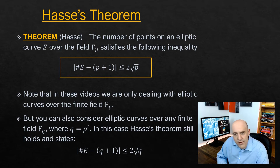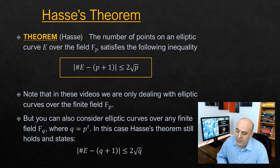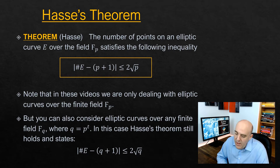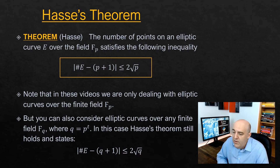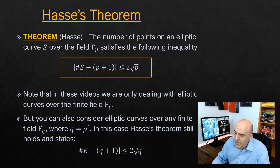Although in these videos we're only dealing with the finite field F_P, you can also have finite fields where Q is a power of a prime — the size of the field is a power of a prime. We call those fields F_Q. Hasse's theorem still holds for elliptic curves over those fields, but we're not going to talk about that in these videos. For us, we're just looking at the case of F_P.